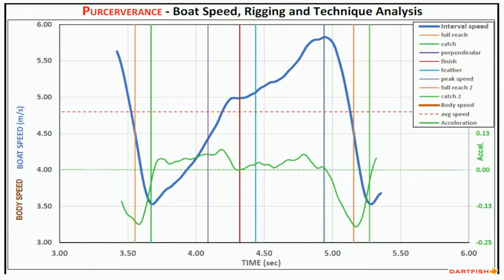This graph can also be provided with an acceleration curve, which is the green line shown here. Acceleration is referenced on the right side y-axis of the graph. Zero acceleration, or constant speed, is shown by a horizontal green dashed line at the 0.00 value on the axis. When the acceleration curve is below the 0 value line, the boat is slowing; above the 0 line, the boat is accelerating. This line should not be confused with speed. Acceleration is the rate of change in speed, and sometimes a good tool for coaches to analyze boat movement.